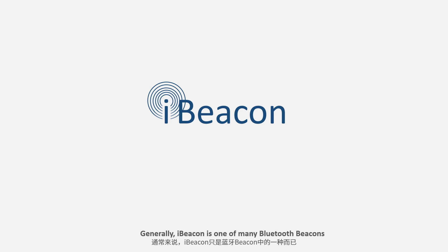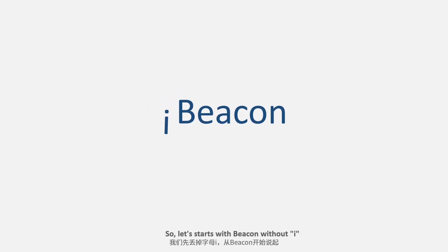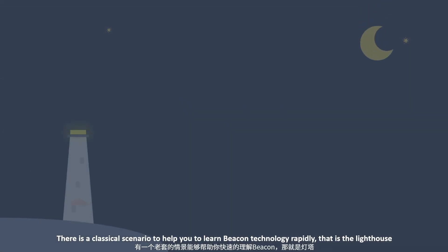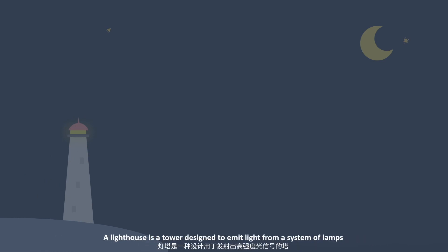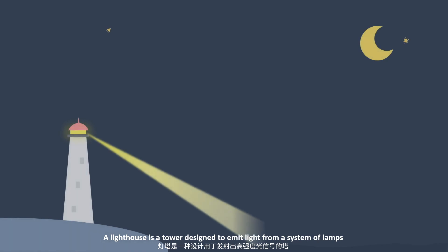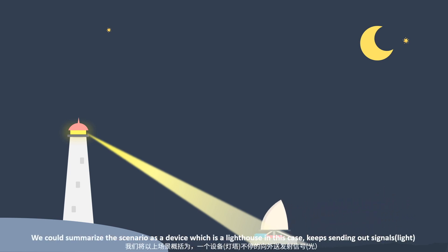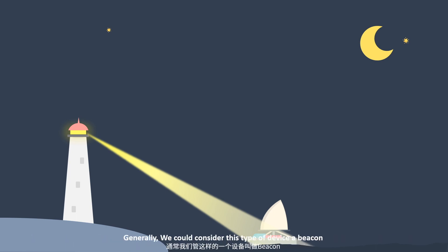Generally, iBeacon is one of many Bluetooth beacons. So let's start with 'beacon' without the 'i'. There is a classical scenario to help you learn beacon technology rapidly — that is the lighthouse. A lighthouse is a tower designed to emit light from a system of lamps. Sailors use a lighthouse to determine the direction of their ship. We could summarize the scenario as a device — the lighthouse in this case — that keeps sending out signals. Generally, we could consider this type of device a beacon.